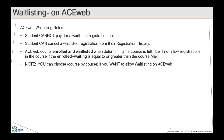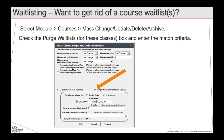On AceWeb, you can enable or disable the capability to waitlist for a course — set this up in Student Manager where you can turn the option on or off. By default, the option to allow waitlisting for a course on AceWeb is on. This is both a system-level and a course-by-course level preference that you control.